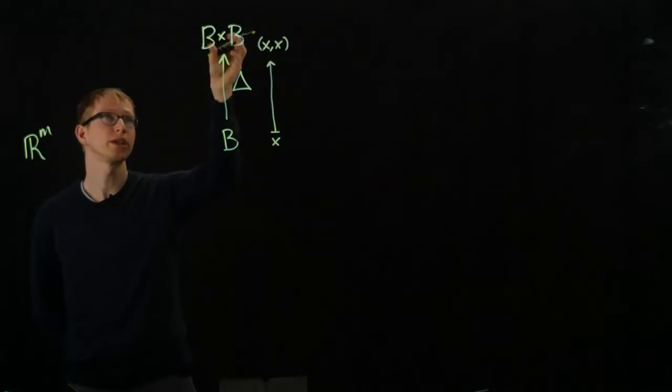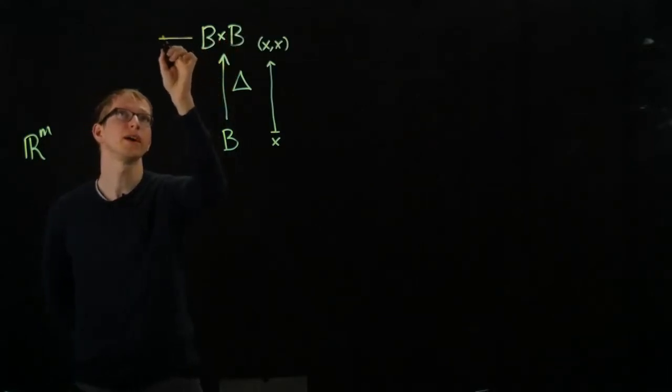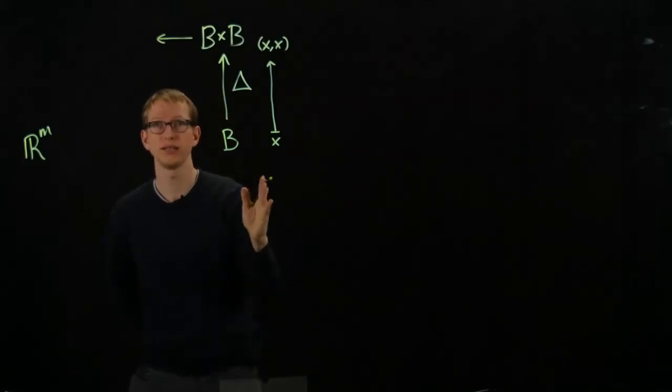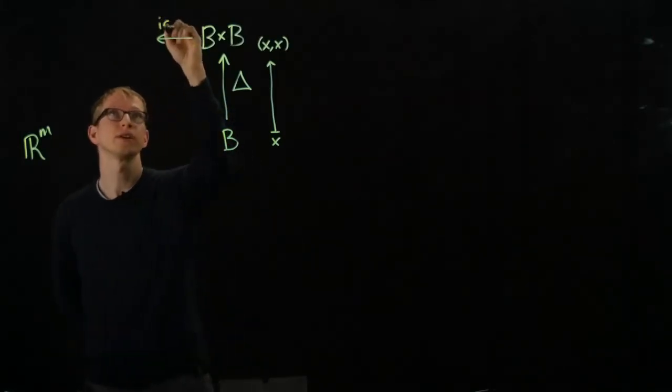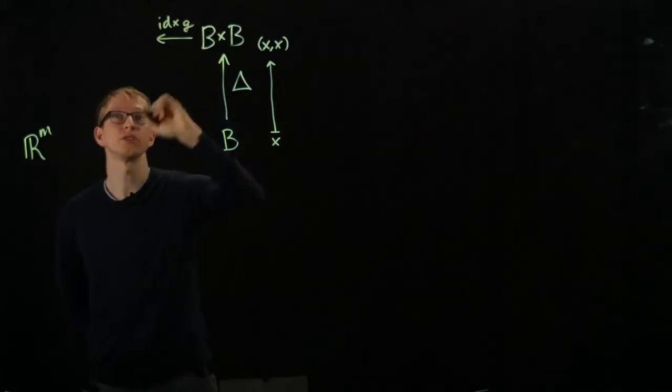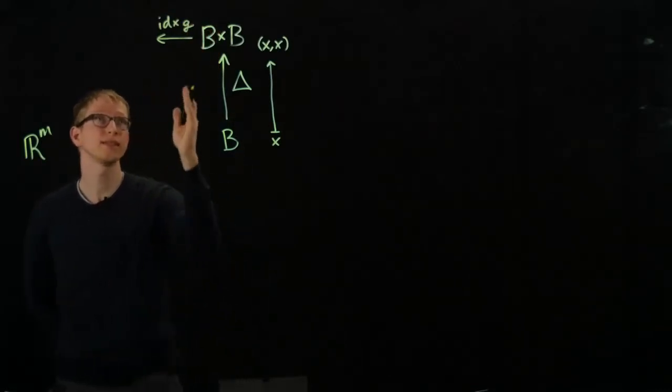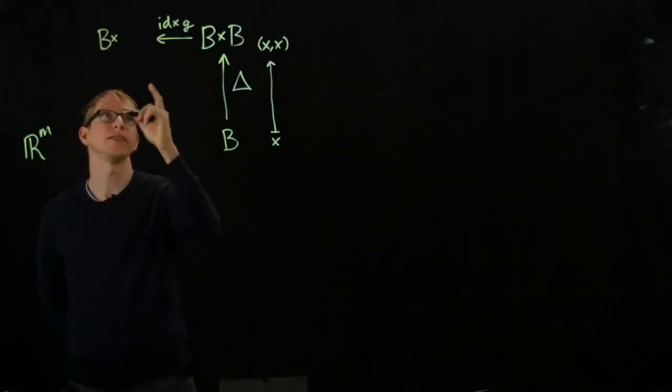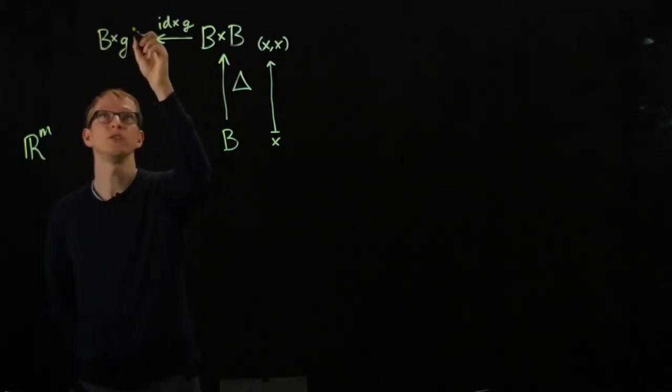And once we're here now, what we can do is we can fix the first variable, for instance, and then apply g to the next one. So we can look at the identity cross the function g. And this is exactly what's going to give us our graph, because the first coordinate is just B, and the second coordinate is g of B.